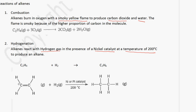If we use the displayed formula, we have C2H4 plus H2, with a nickel catalyst and a temperature of 200 degrees Celsius, and we get ethane. So this is one way to convert an alkene into an alkane: you have an alkene here and you produce an alkane.